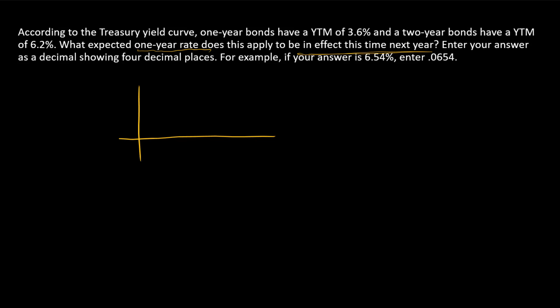I'm going to plot two points on the yield curve. We've got a one-year security and a two-year security. The one-year security has a yield to maturity of 3.6%, and the two-year security has a yield to maturity of 6.2%. So for this region, we have an upward sloping yield curve. That's the information we are given.